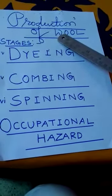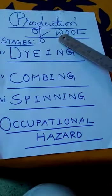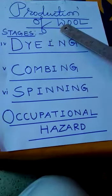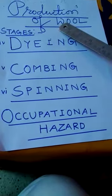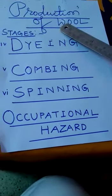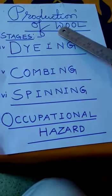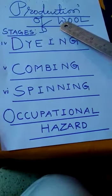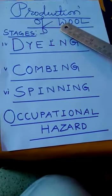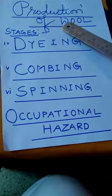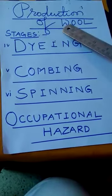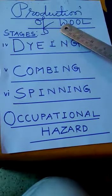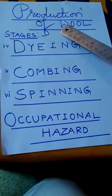Then we discussed the second stage, that is scouring, which is the process of cleaning the fleece which is sheared from the sheep's body. And the third stage was sorting. This is essentially a process in which different categories of wool are separated according to their quality.